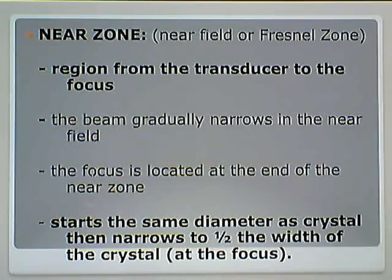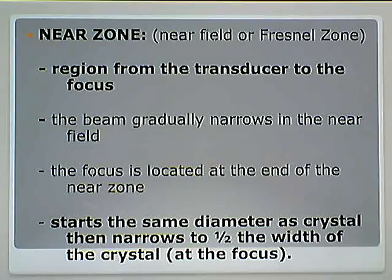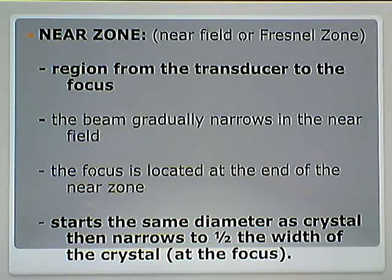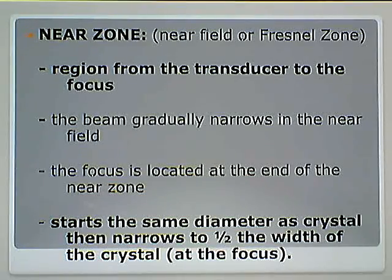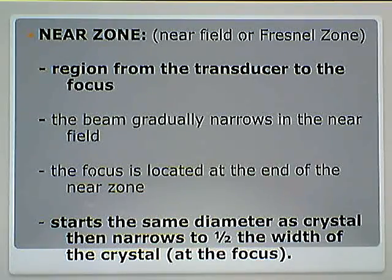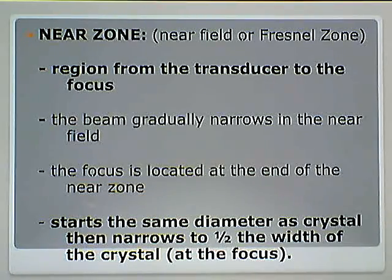The near zone, or near field, or Fresnel zone, is the region from the transducer to the focus — from the start of the beam all the way to the end of the narrowing. The beam gradually narrows through the near field. The focus is located at the end of the near zone. What's the start of the near zone? The transducer. What's the end of the near zone? The focus.